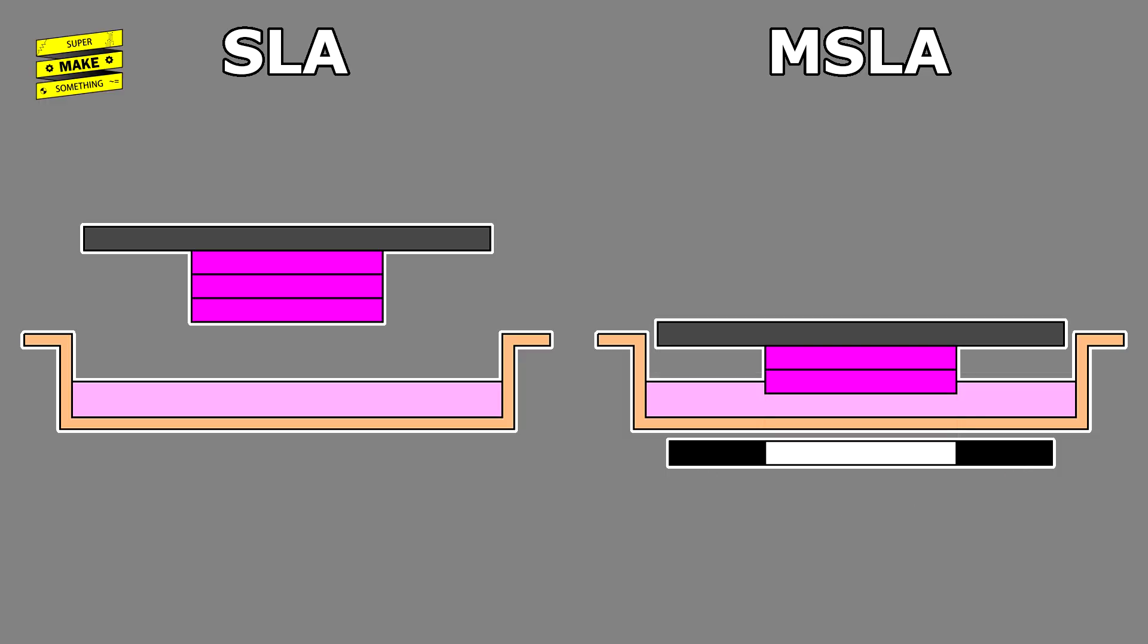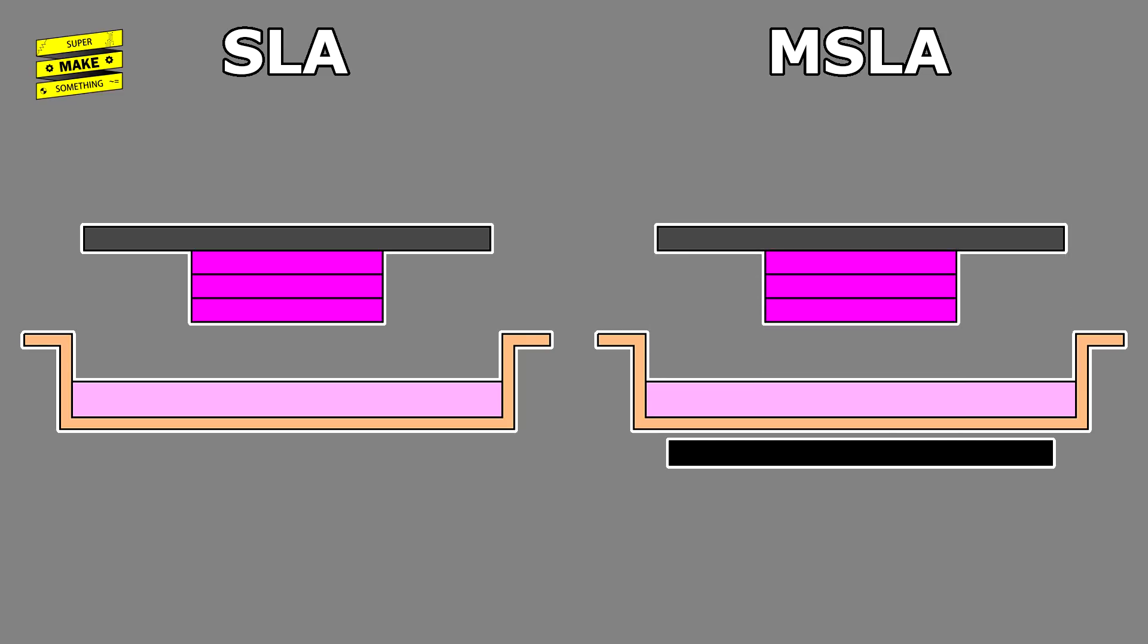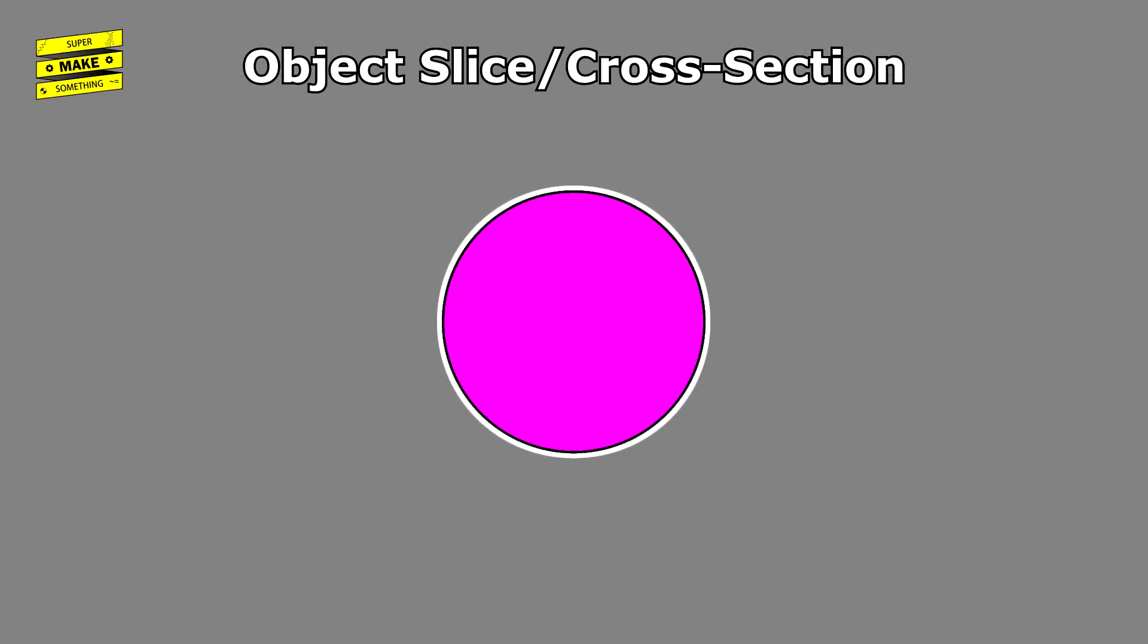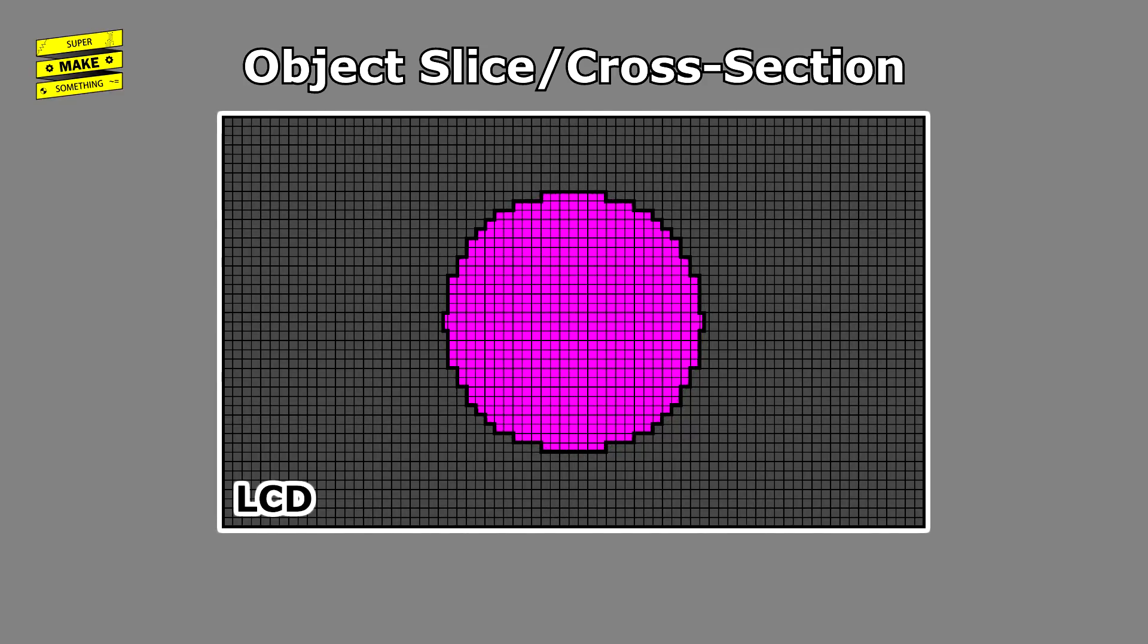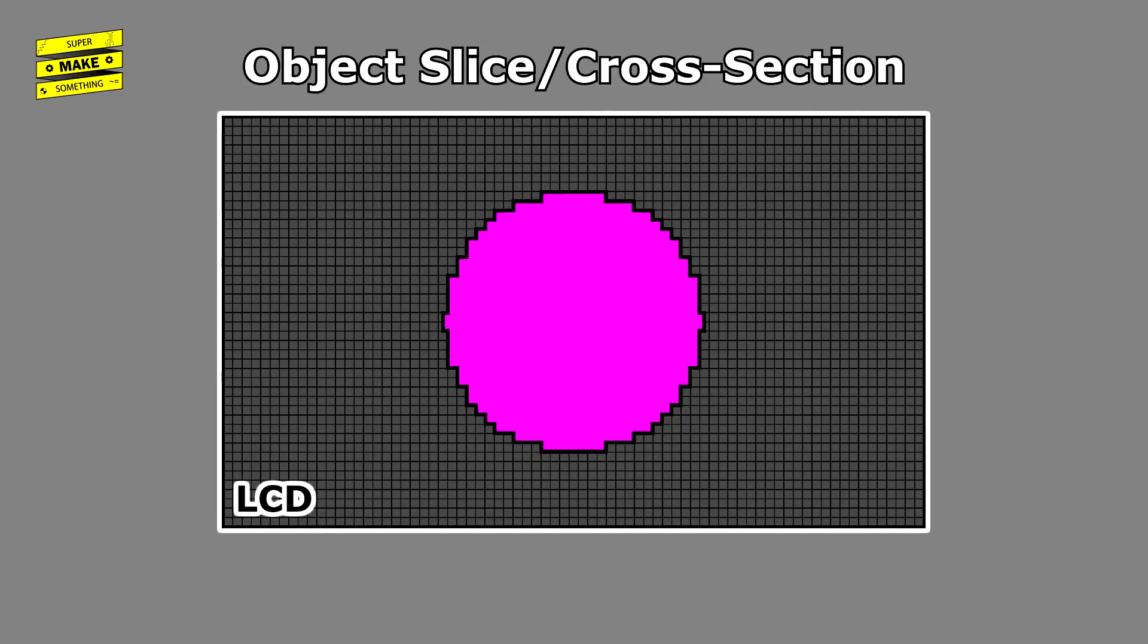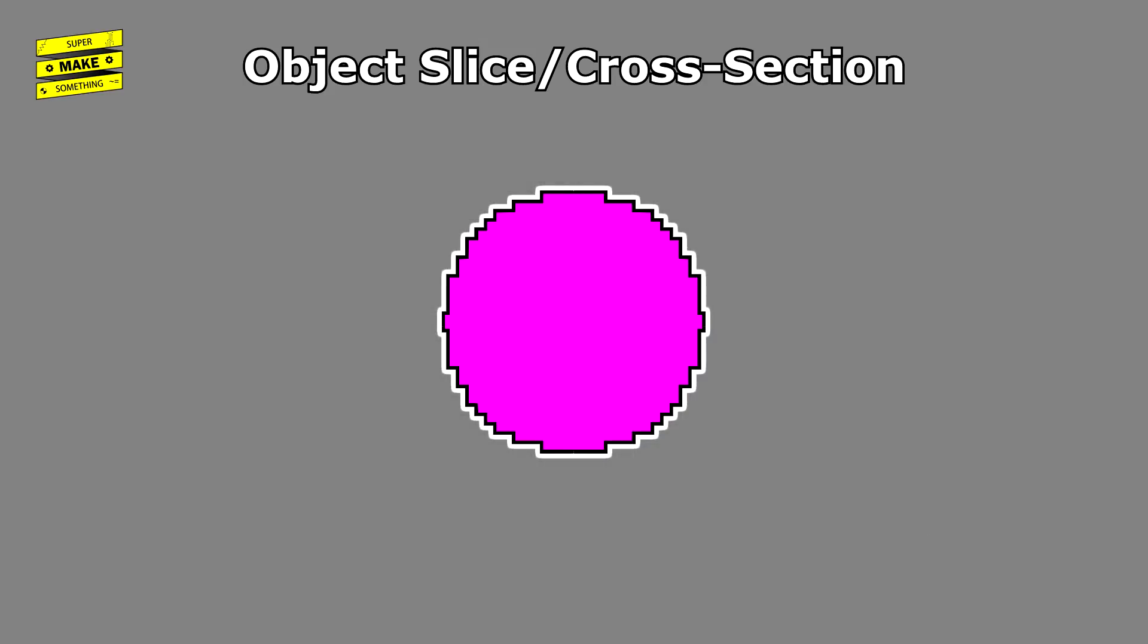This simultaneous exposure can speed up print time compared to an SLA approach, though the print resolution is slightly lower, since the level of detail that can be achieved with masked stereolithography is determined by the resolution of the LCD screen that is used to expose and mask the resin from UV light.